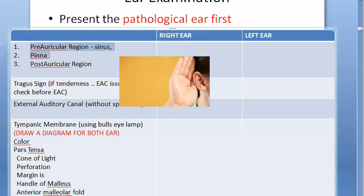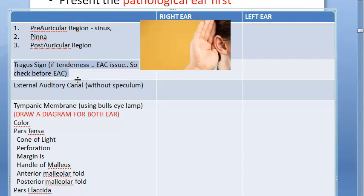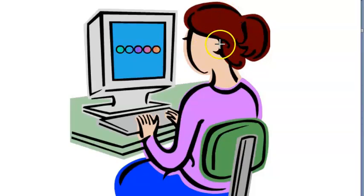In the post-auricular region, look for scars, edema, swelling, fistula, and lymph nodes; palpate the mastoid process. For the tragus, press to check for tenderness — tenderness indicates an external auditory canal issue. Examine the EAC without speculum and note wax, fungus, fistula, exostosis, keratosis obturans, malignant otitis externa due to pseudomonas, green discharge, or foreign body.